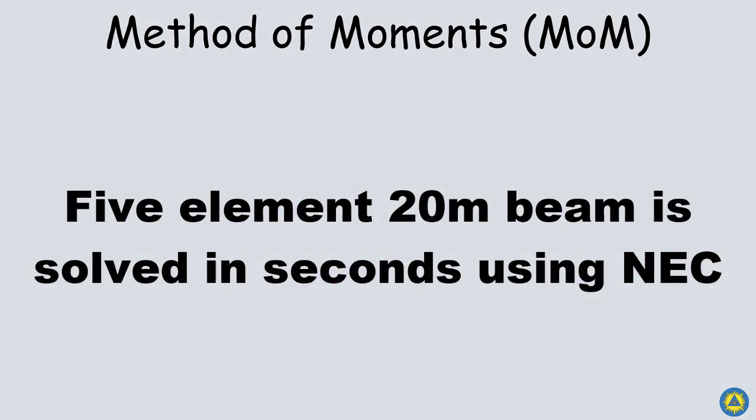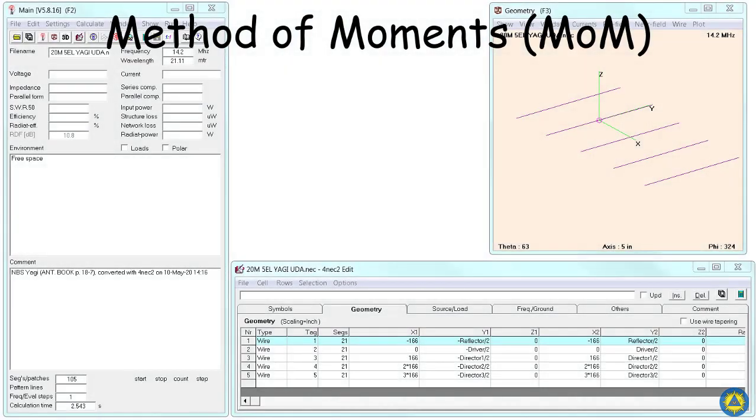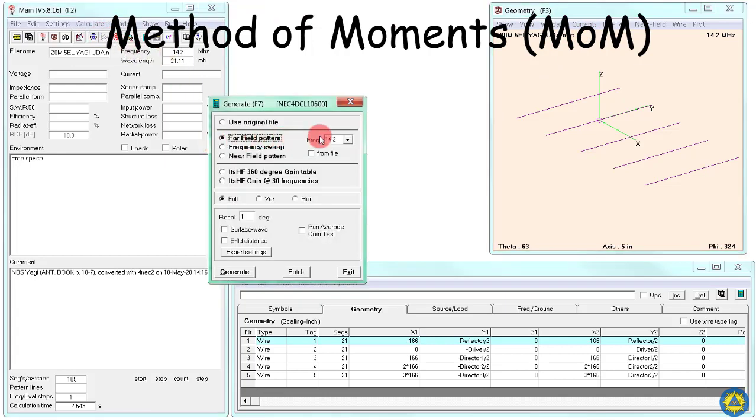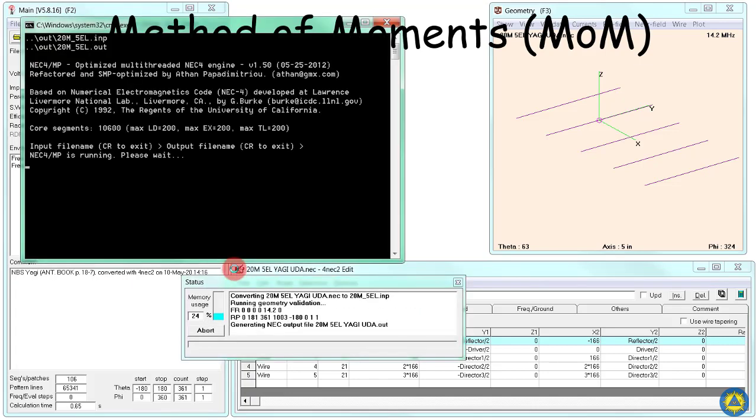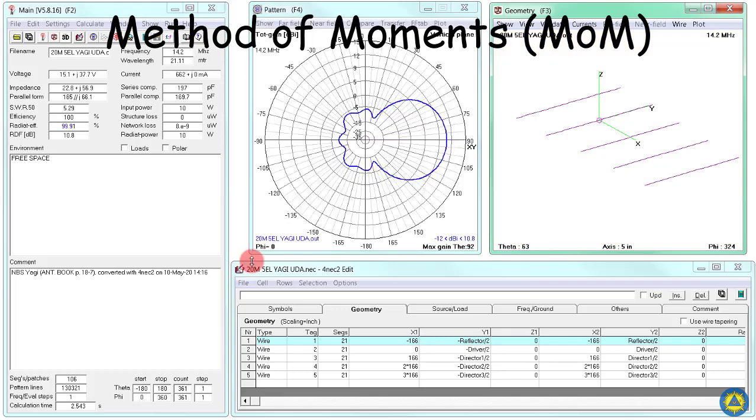Now we're going to compute a five element simulation using FOR-NEC-2, which uses the NEC method of moments. We have our beam set up here as wires, XYZ coordinates of wires, and we're ready to go. It's already been good dimensioned per a particular design. We fire it up at 14.2 megahertz and start it. It runs in the background, computes really quick, and behold, already done. We have a pattern, we have currents that we can witness. We can look at the phases of the currents with the press of a button, analyze the gain, the pattern, the front to back.